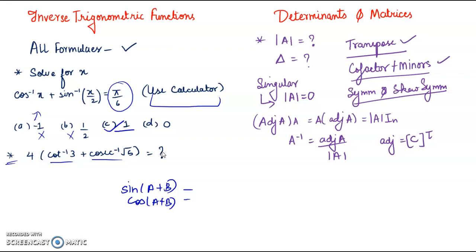Now determinants and matrices: they may denote determinant with this symbol or maybe this triangle. Transpose, cofactors and minors, symmetric and skew-symmetric matrices. What is singular matrix? That is when determinant of that matrix equals 0. This formula: adj(A)·A = A·adj(A) = |A|·I. Also, A⁻¹ = adj(A)/|A|. Please practice Cramer's rule also, and you know adjoint equals the transpose of cofactor.